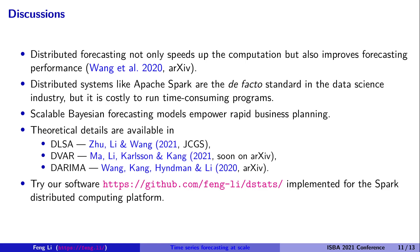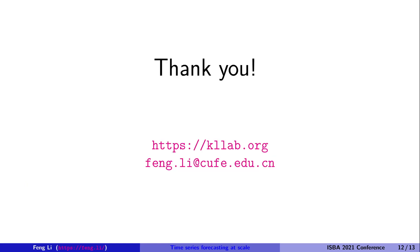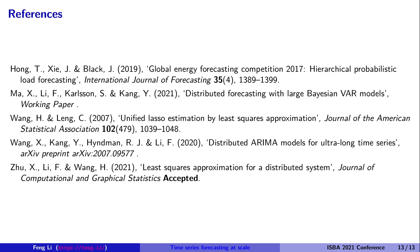If you are interested in theoretical details, please see our papers: the distributed least-square approximations paper by me and co-authors published in JCGS, and the distributed VAR models paper available on arXiv. We also have a distributed AR model on arXiv. If you know how to run programs on the Spark distributed system, you can try our software on GitHub. Thank you — you are welcome to visit my lab and contact me by email. Here is a short list of references.